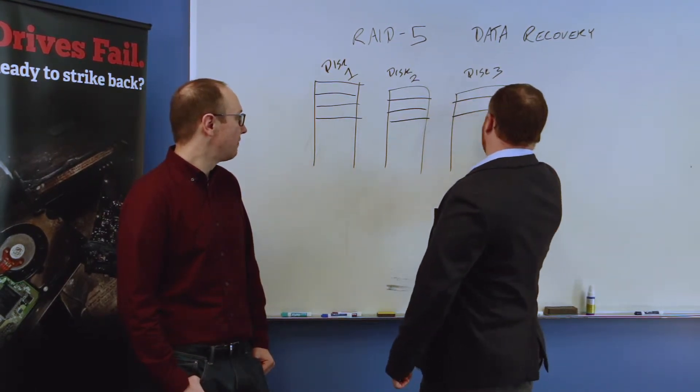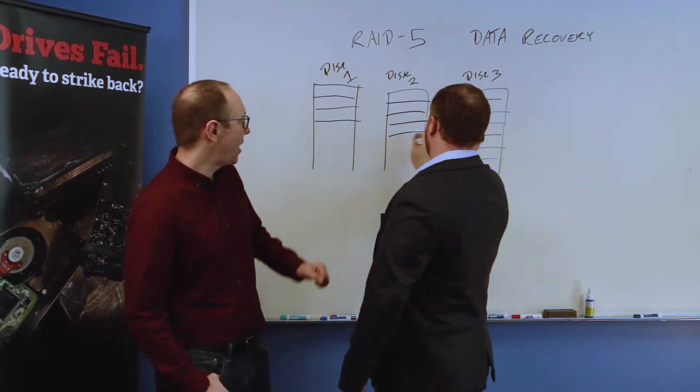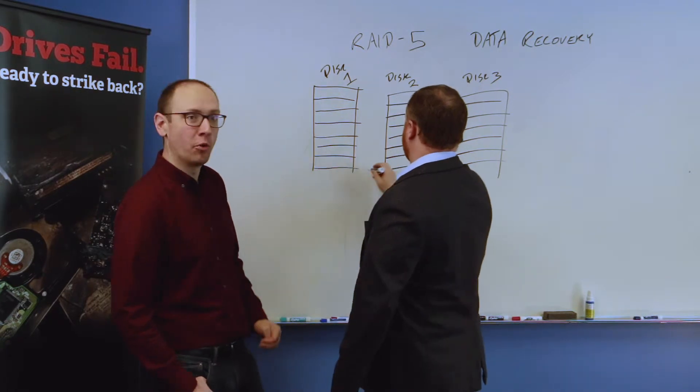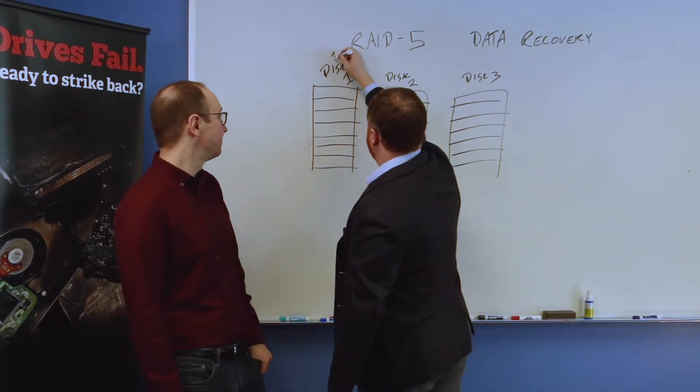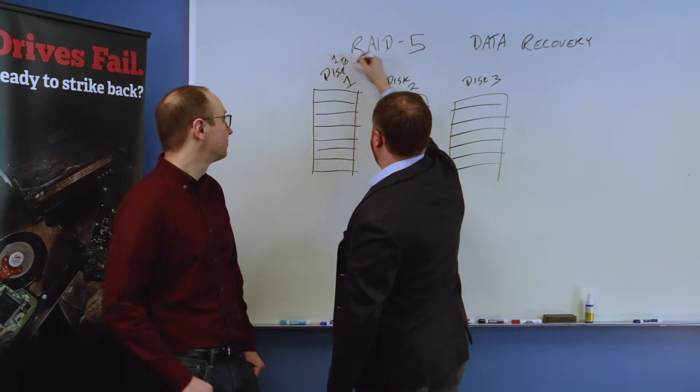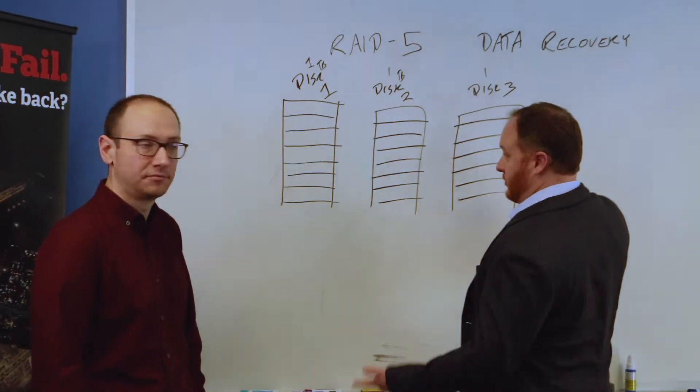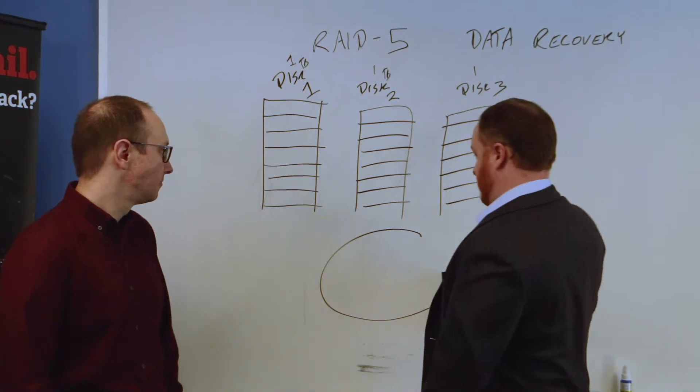The capacity of the drives would basically give a capacity of the volume equal to the sum of two drives because you're basically using one drive's worth of redundancy. So to make this easy, if we had one terabyte drives here, these are each disks, we're gonna have two terabytes worth of capacity.